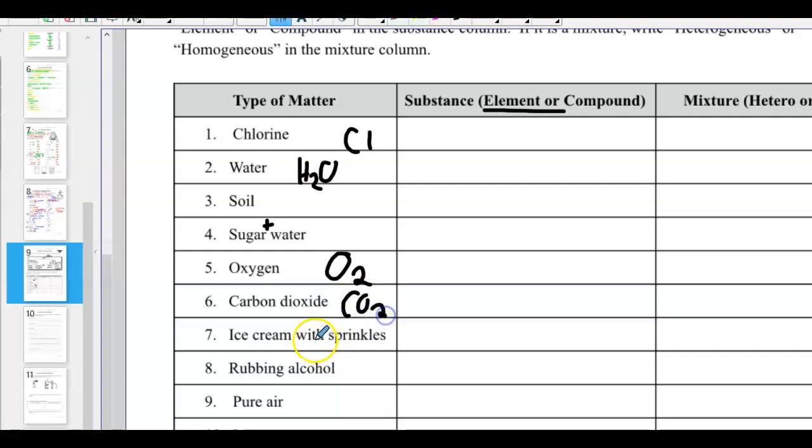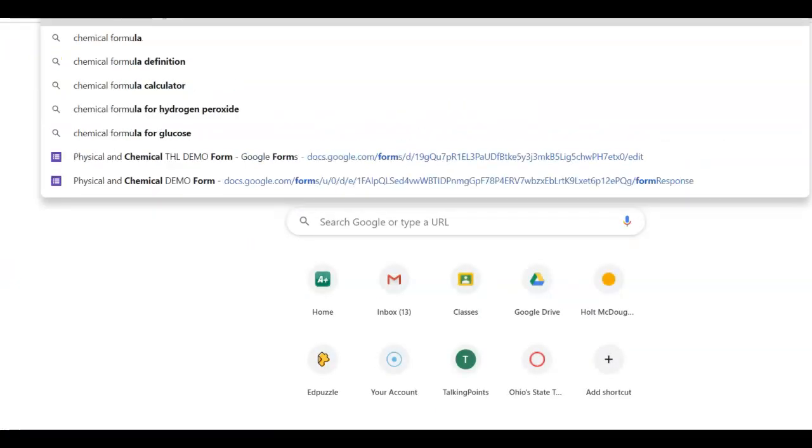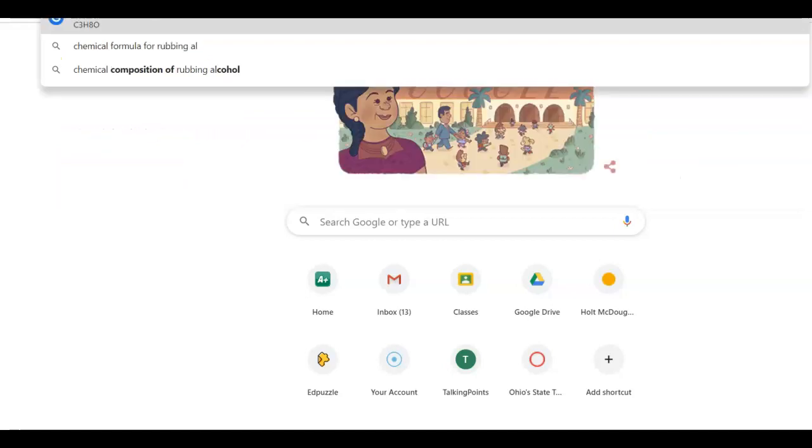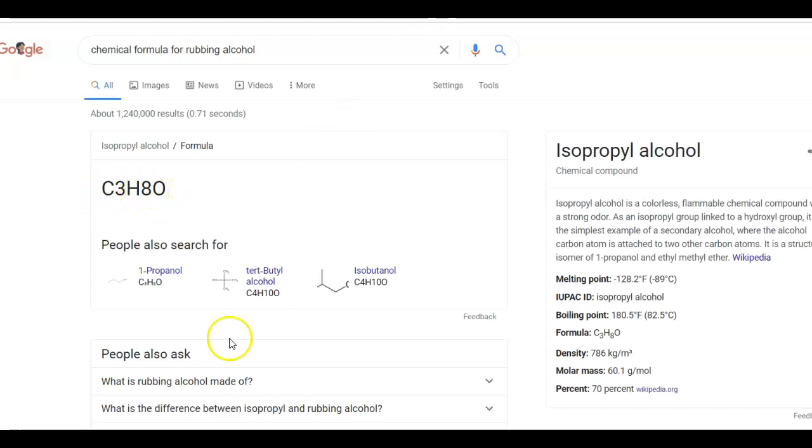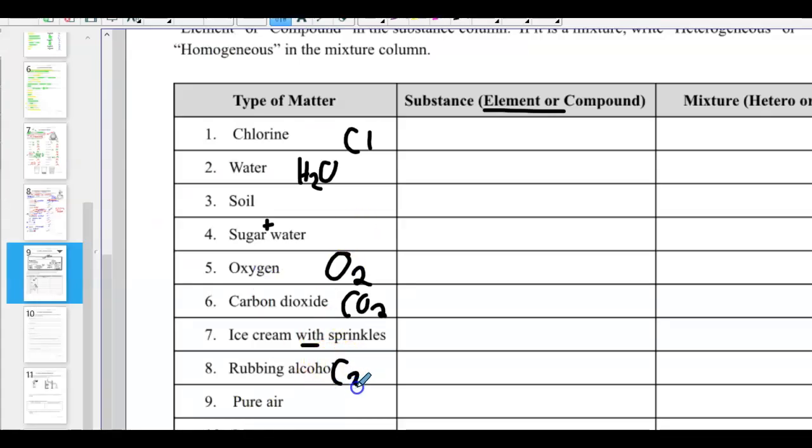Carbon dioxide is CO2. Well, here I can see I got a mixture. Rubbing alcohol. So let's figure out chemical formula for rubbing alcohol. C3H8O. So remember I said before different types of alcohols have different formulas. This one we specified that type of rubbing alcohol. Pure air. We know that one's going to be nitrogen, but combined with oxygen, combined with carbon dioxide, and a lot of other stuff. And then iron is Fe.